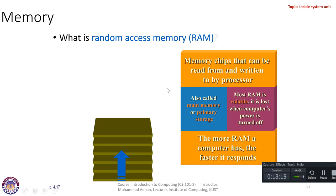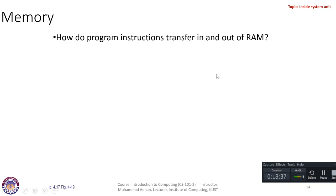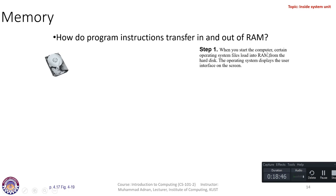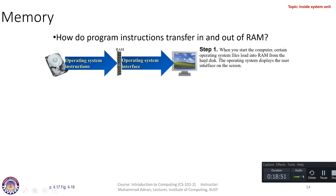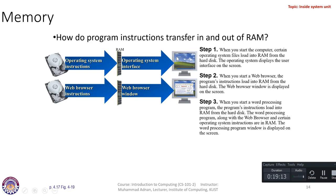If you buy more RAM, the computer will respond faster. For example, if you are playing a heavy game and you have a larger RAM, the computer will respond fast and you will enjoy playing. Regarding how program instructions transfer in and out of RAM: in step one, when you start the computer, certain operating system files load into the RAM from the hard disk — not all of the operating system, just certain files. The operating system then displays the user interface on the screen.